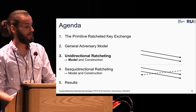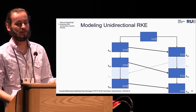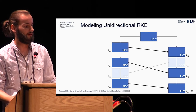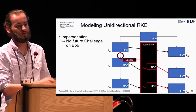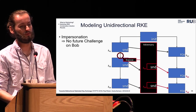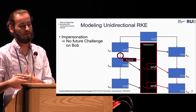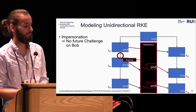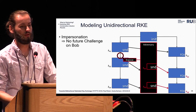To define security for unidirectional ratcheting, we look at the primitive that allows Alice to send and Bob to receive, and we exclude the trivial attacks where the adversary can trivially win the key security challenge. The first trivial attack to consider is impersonation of Alice towards Bob: if Alice is exposed, the adversary can use her state to invoke the send algorithm itself, and of course know which keys Bob will compute in the future after receiving these adversary-made ciphertexts. Therefore, keys computed after such an impersonation by Bob will not be challengeable by the adversary.